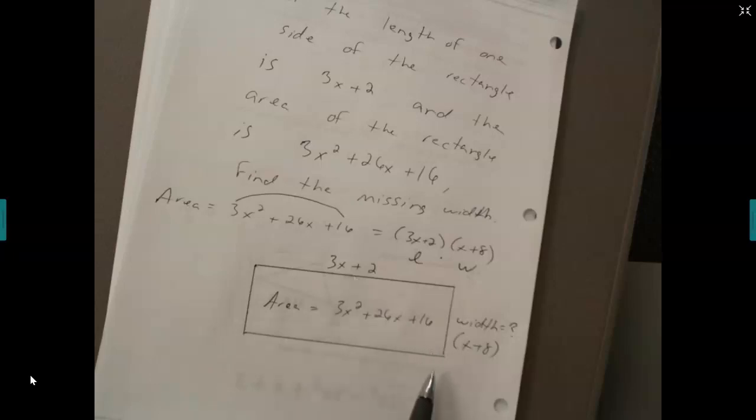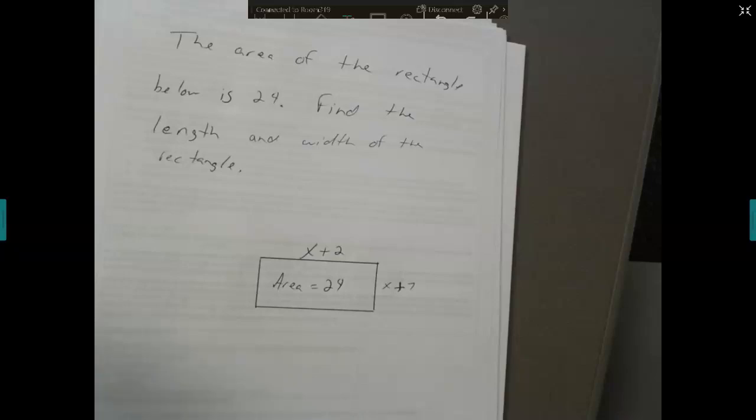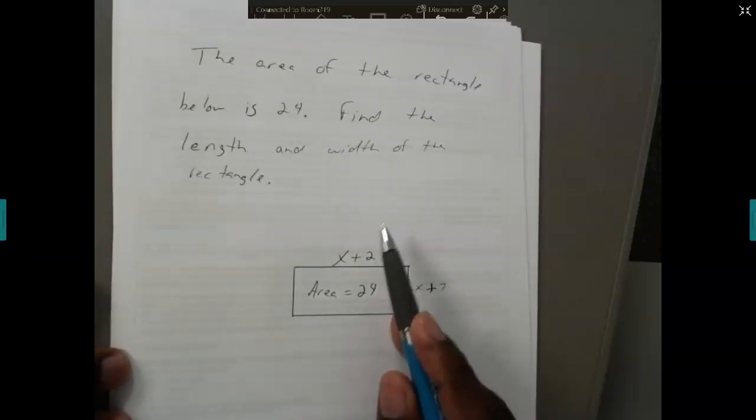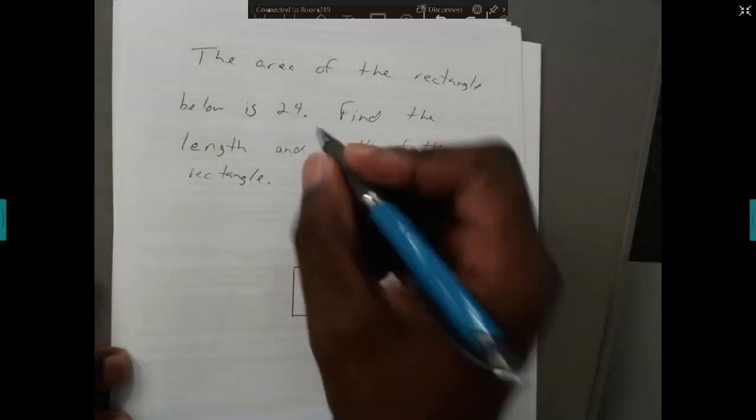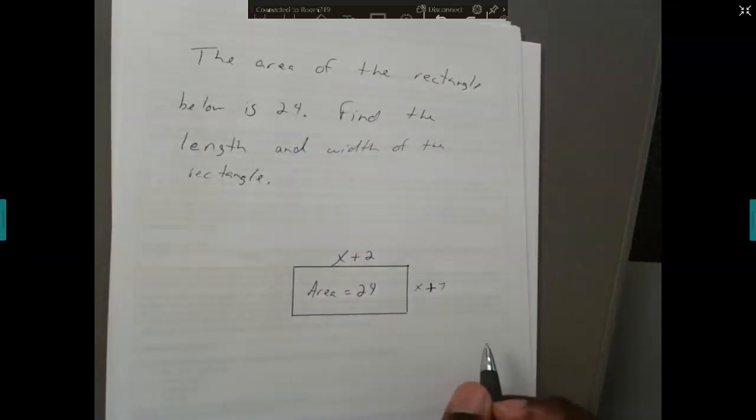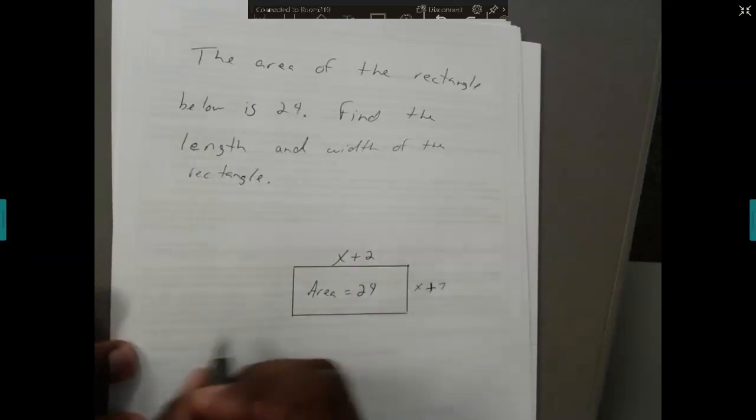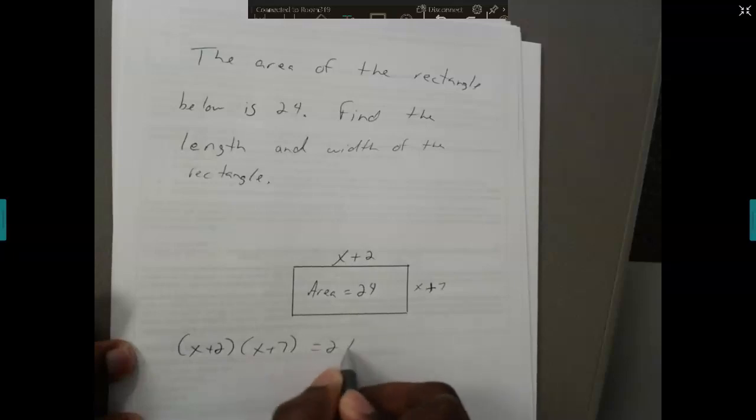Here's the last type. In this problem it says the area of a rectangle below is 24. Find the length and the width of the rectangle. Basically what we know is that the area is 24. I can make an equation that says x plus 2 times x plus 7 equals 24, because area is length times width.